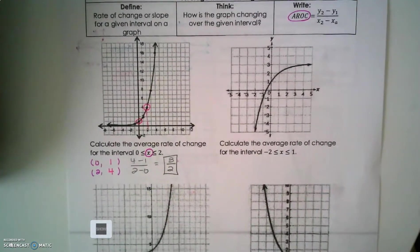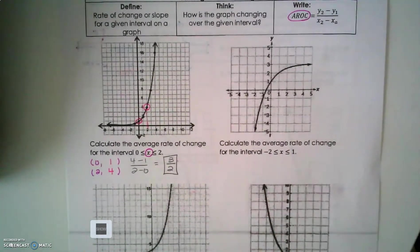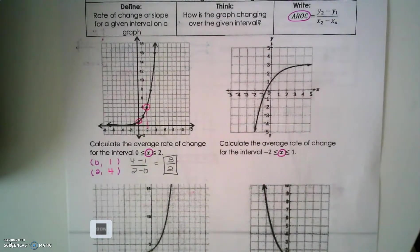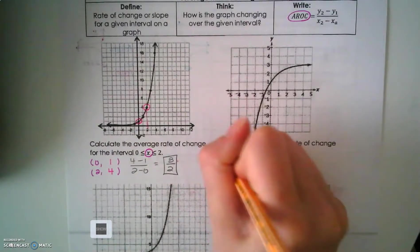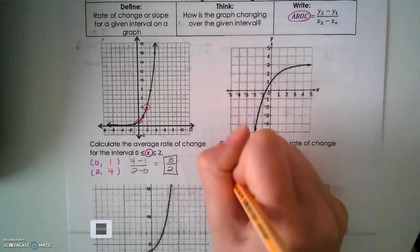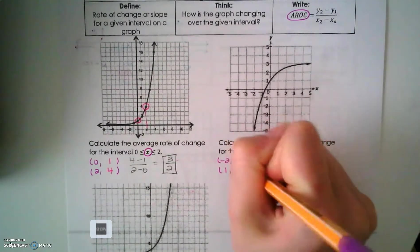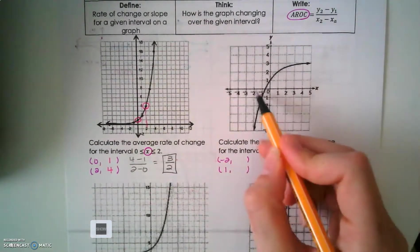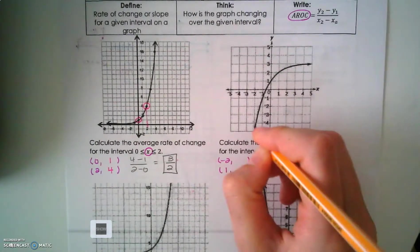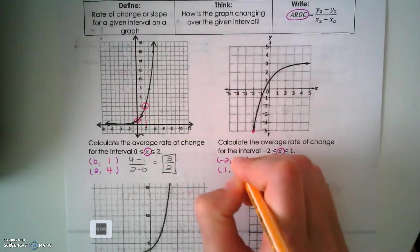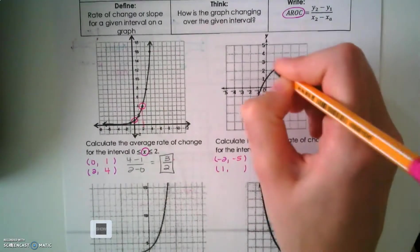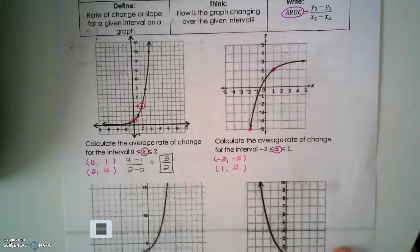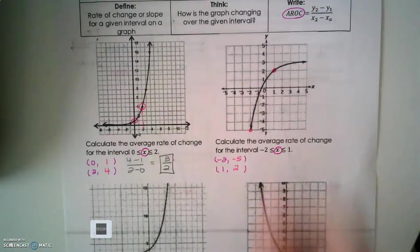Calculate the average rate of change between negative 2 and negative 1. So again, remember that interval notation is an x value. So negative 2 and 1. I'm going to go to my graph where x equals negative 2, and I'm going to say it crosses right here at this point, negative 5. I'm going to go where x is 1, and I have a point on my graph with a y value of 2.